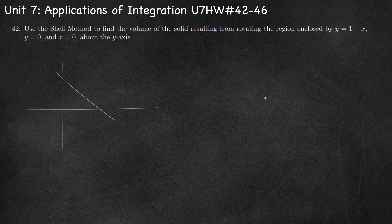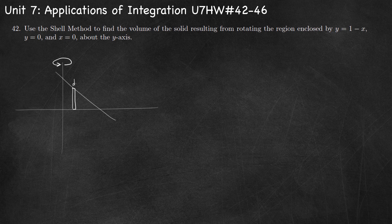Number 42: we have a region formed by y equals 1 minus x, y equals 0, and x equals 0, and we're going to rotate this region around the y-axis. So we want to draw our reference rectangle parallel to our axis of rotation. Here's my rectangle — it's a vertical rectangle because it's parallel to the y-axis, and that makes this a dx problem.